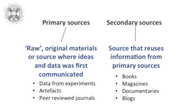However, even peer-reviewed journals cannot guarantee 100% reliability, because they might tend to support points of view which are well established, and evidence for new ideas or different viewpoints can be overlooked. Information from websites, blogs, and also newspaper or magazine articles should be treated with caution, as this is much less likely to have been peer-reviewed.